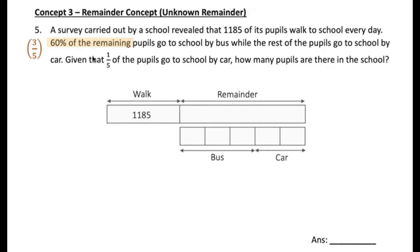Now the last statement is the difficult part. Given that one-fifth of the pupils go to school by car — this is one-fifth of everything. This big bar on top is all the pupils, and these 2 units happen to be only one-fifth of that top bar. That's what it means: one-fifth of the pupils go to school by car.